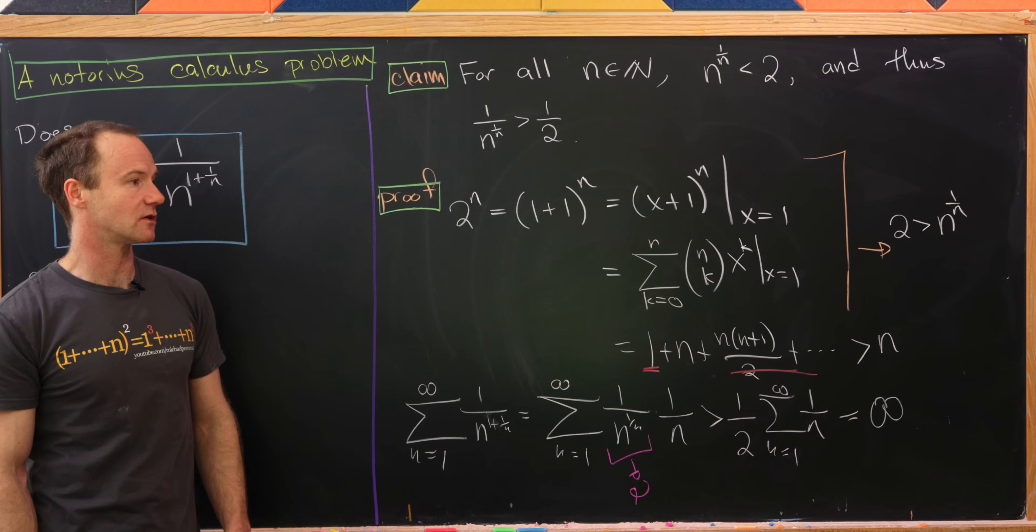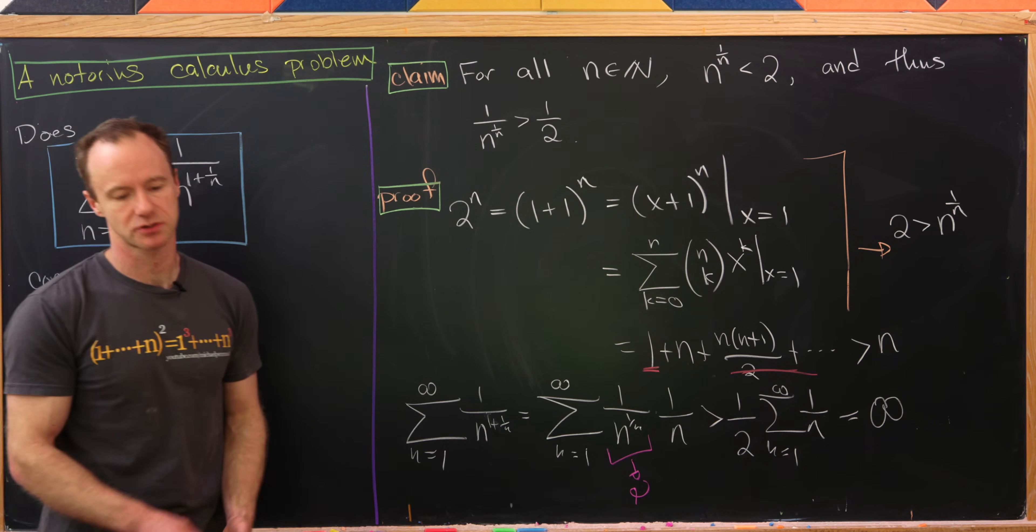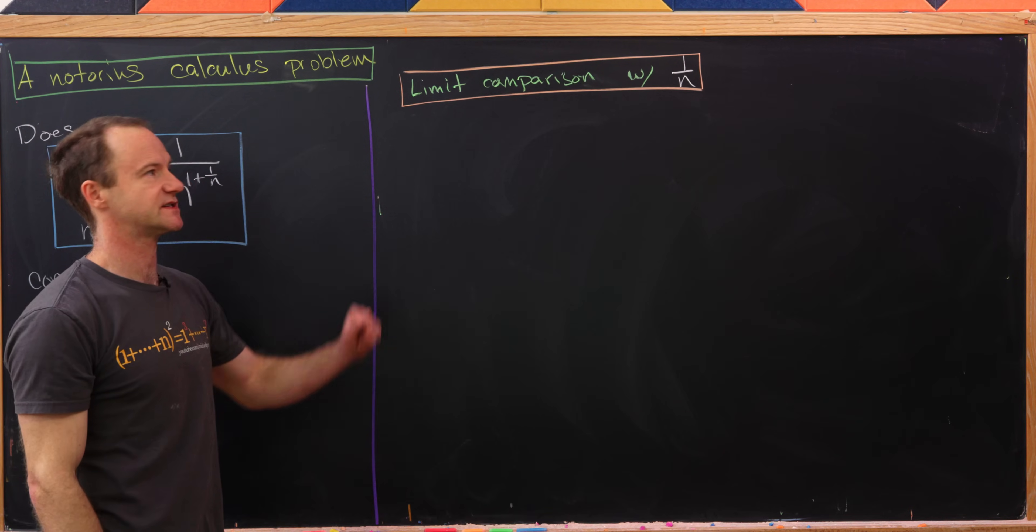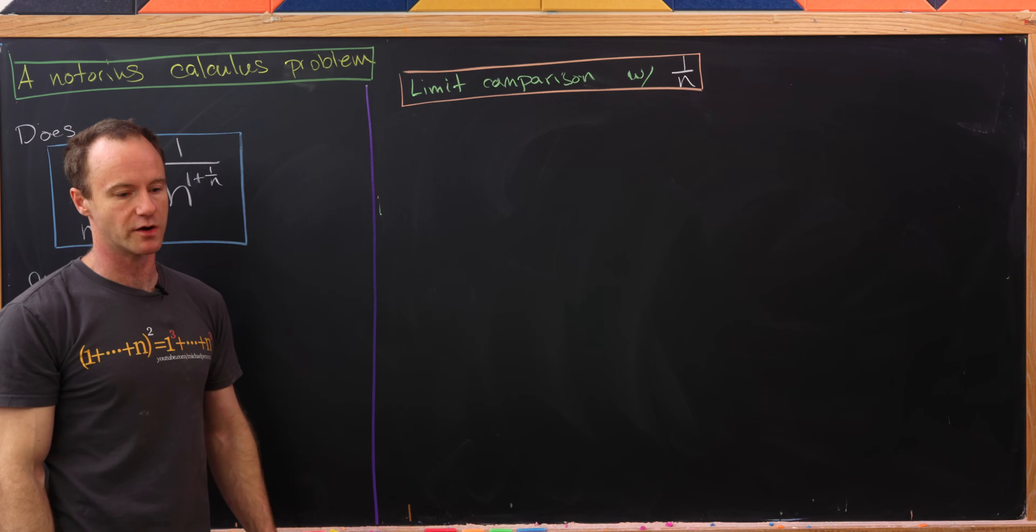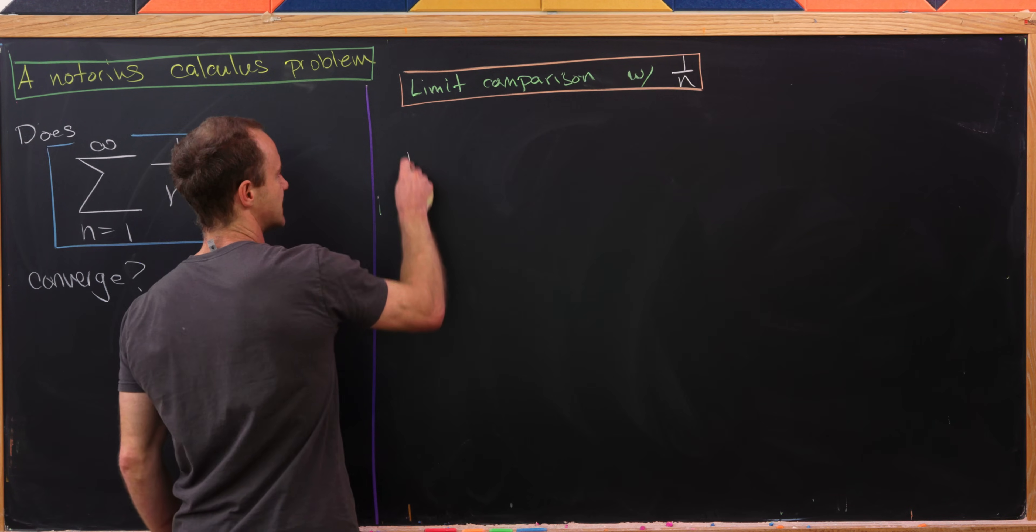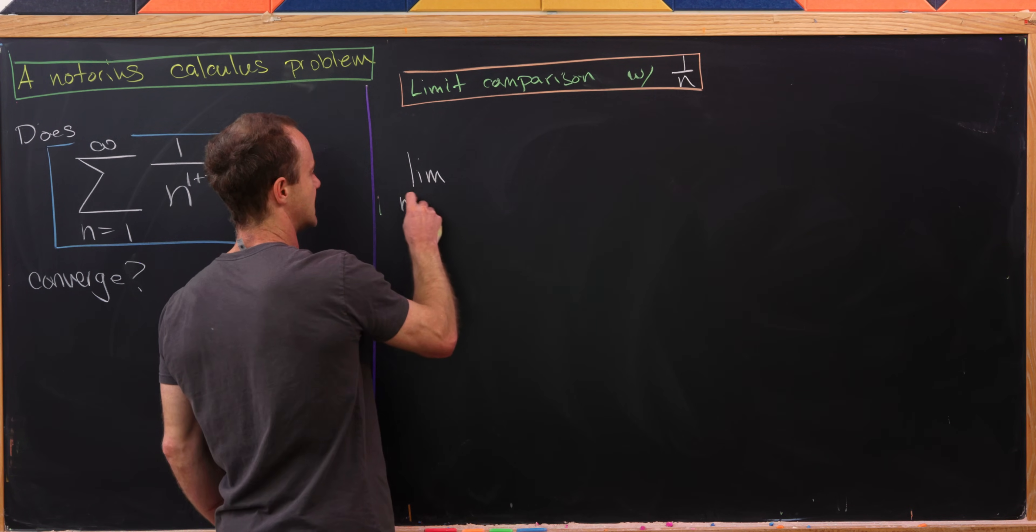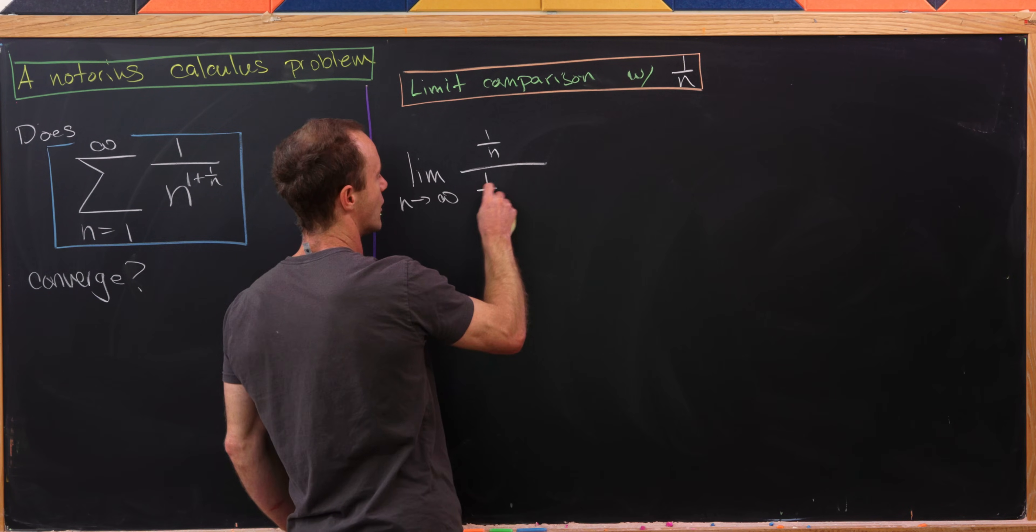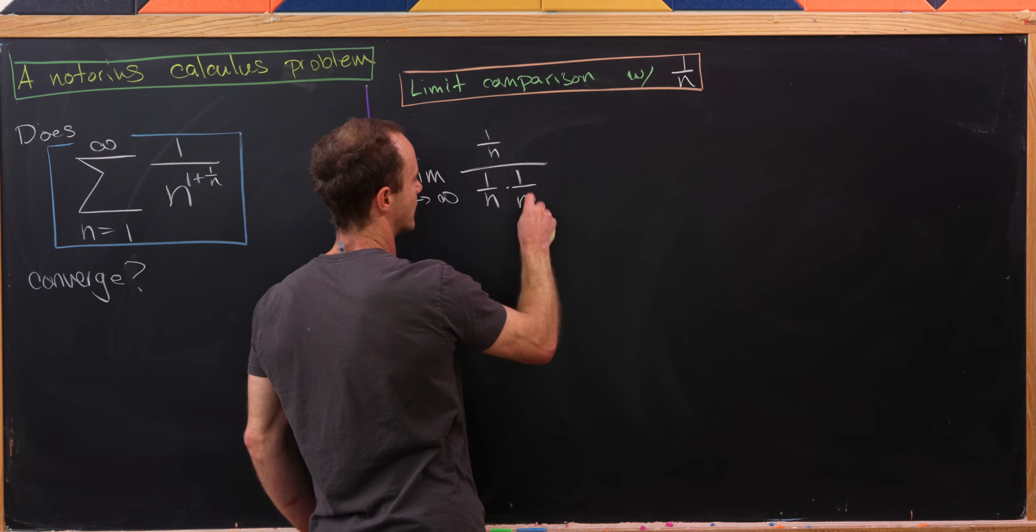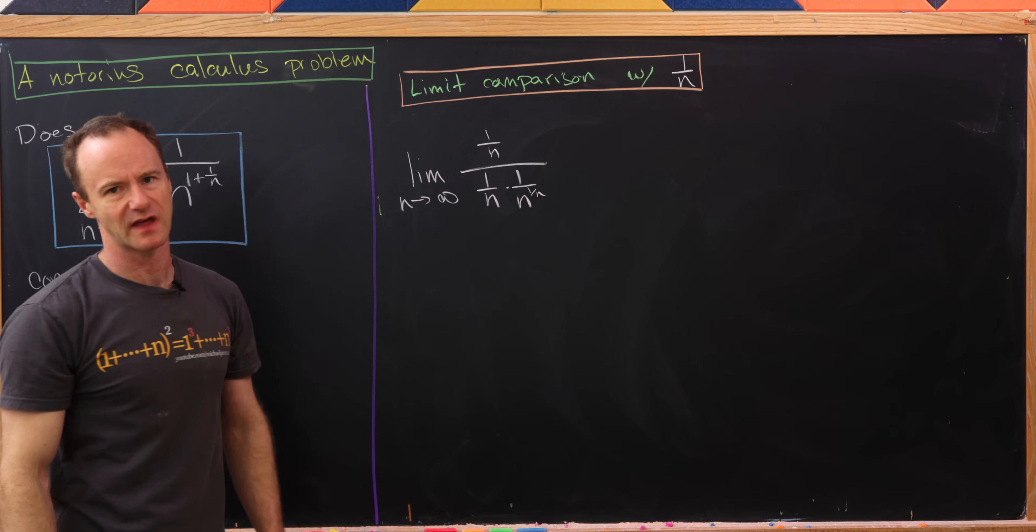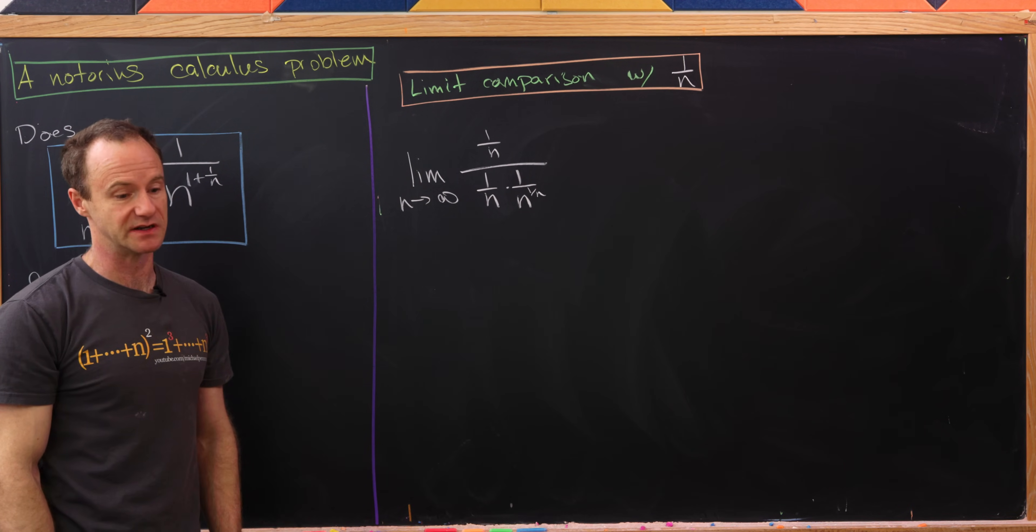So let's go ahead and look at our second approach. Our second approach will be to use a version of the limit comparison test with the harmonic series 1/n, which like I said we know diverges. So that means we're going to look at the limit as n goes to infinity of (1/n) over (1/n × 1/n^(1/n)), where I factored that denominator as we did before.